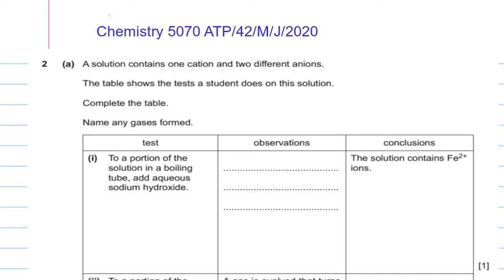Bismillahir Rahmanir Raheem, this is Miss Aisha Manzoor and you are watching my channel Chemistry Solutions. In this lecture I am going to cover the part of identification of ions and gases, where we are going to discuss question number 2 from the ATP past paper of O-levels, variant 4-2, session June 2020.